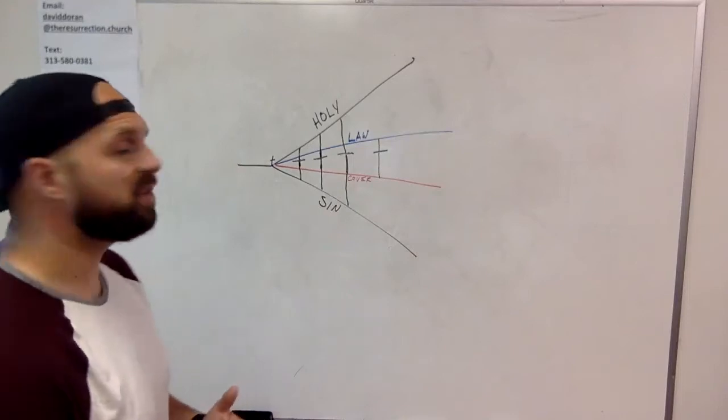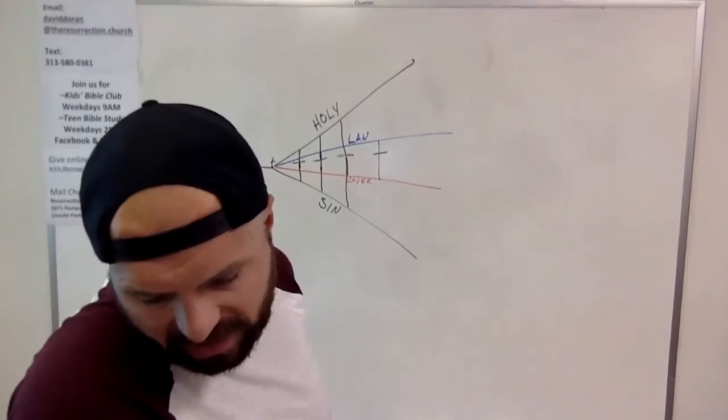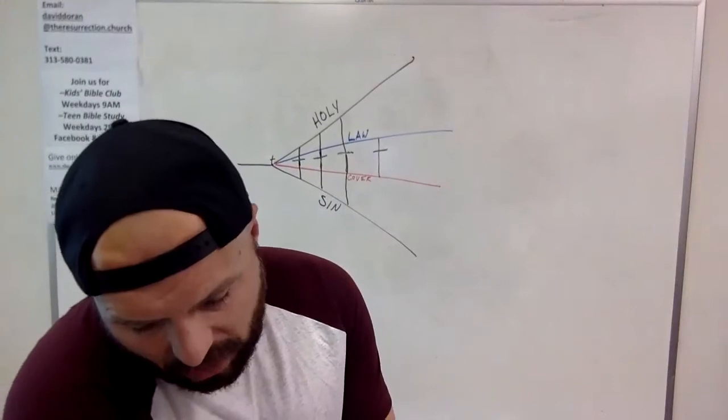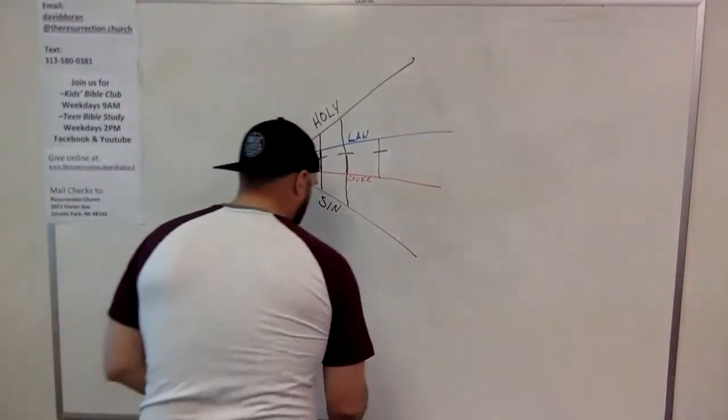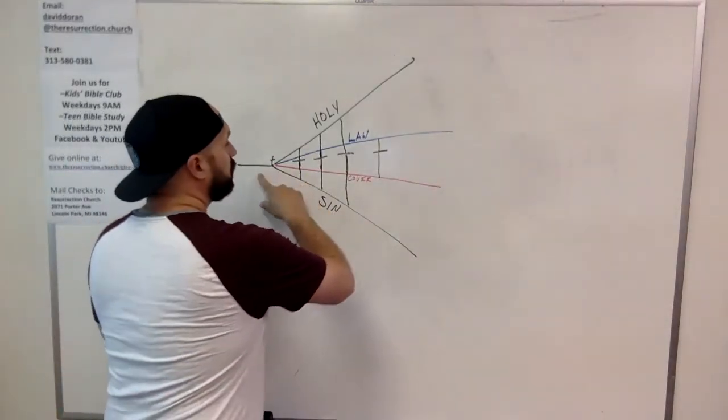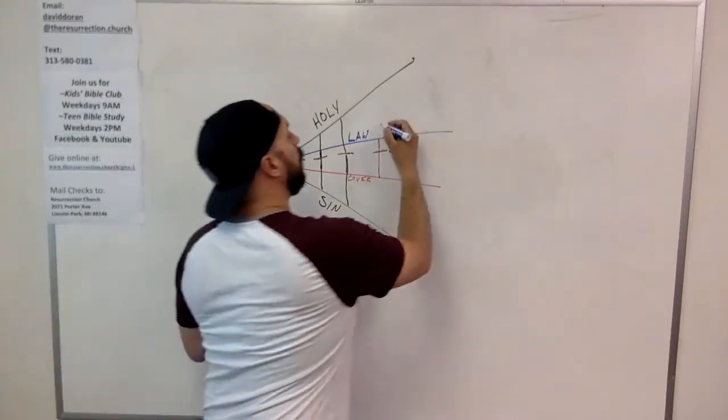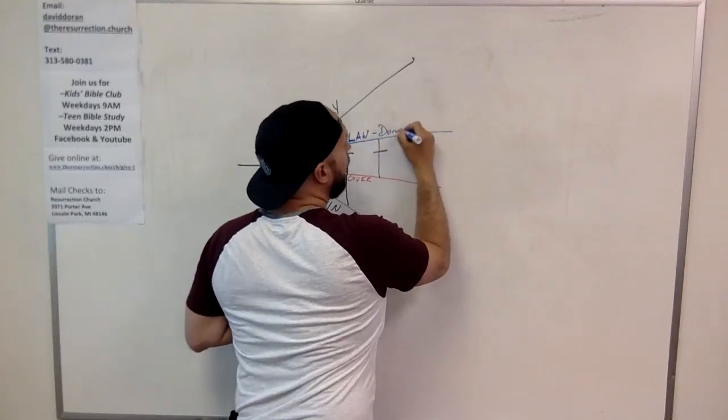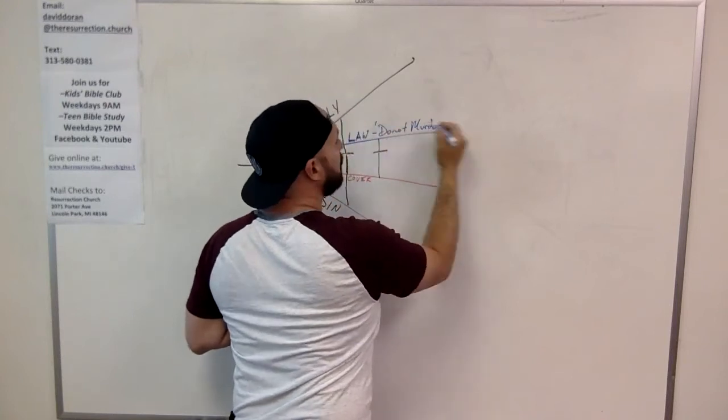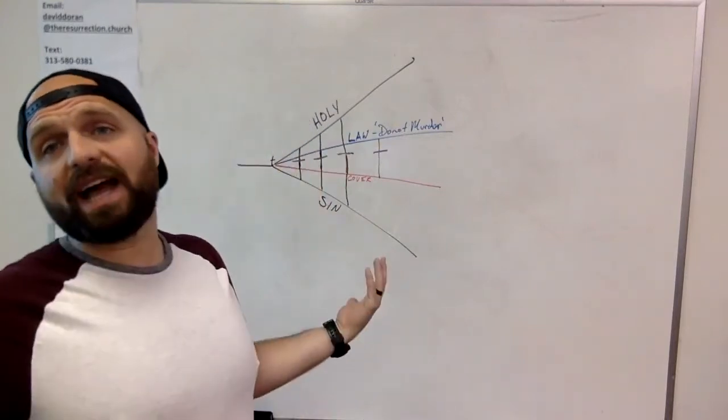So now let's think about our passage specifically. You've heard it was said, let's read it again. You've heard it was said to the people long ago, you shall not murder. Okay. You shall not murder. And anyone who's subject to murder will be subject to judgment. Now, I don't think that it's unfair to say, okay, look, Jesus is saying the law that was a boundary for the people of Israel was this, do not murder. Right? That's a high, it's a high standard, but you know what? I haven't murdered anybody.